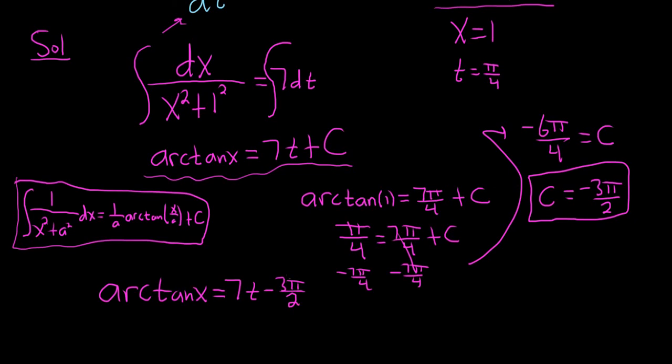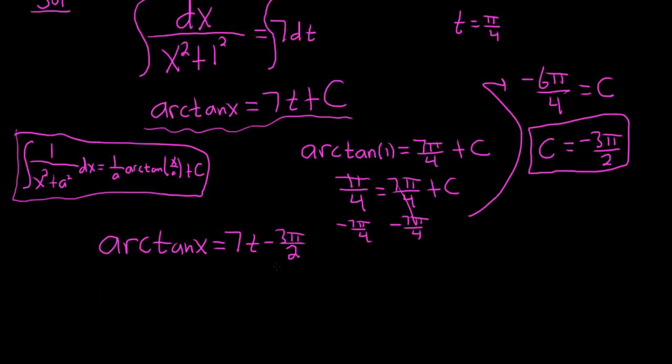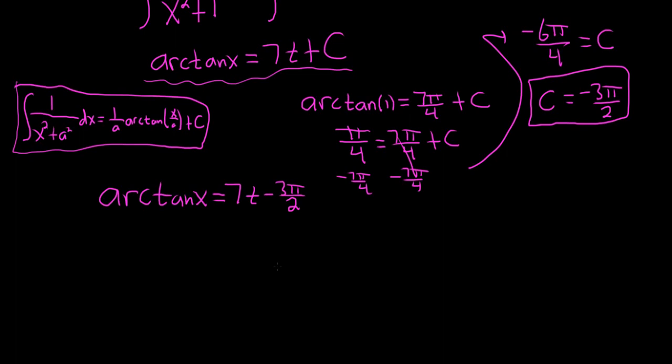And we are almost done. This next step is a common source of confusion for people. Remember that the arctangent function and the tangent function are inverses. If the arctangent takes x and gives us this, that means the tangent function has to take 7 t minus 3 pi over 2 and give you back x.